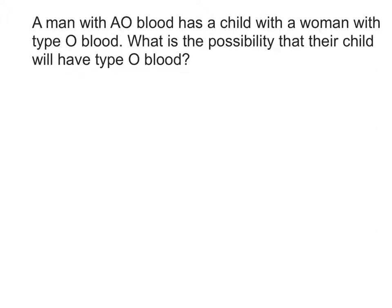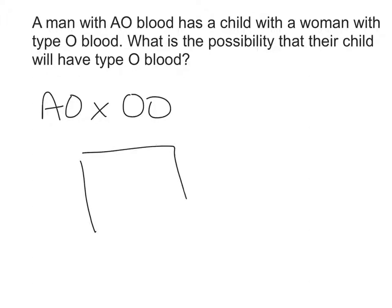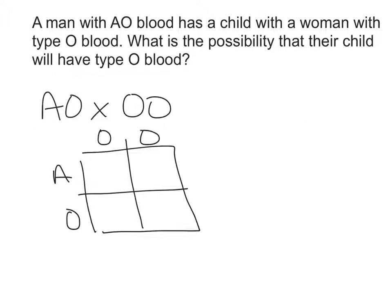Here's another blood type question, and in this one we have our genotypes already given to us. The man has the genotype AO, and he marries a woman who is type O blood, or genotype OO. We're going to put those gametes into a Punnett square. AO for the man, OO for the woman. We fill in the boxes: AO, AO, OO, and OO.